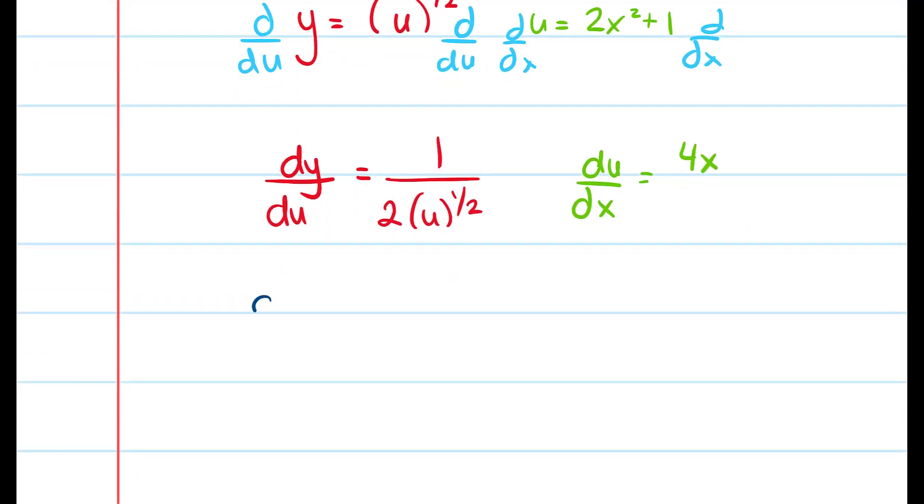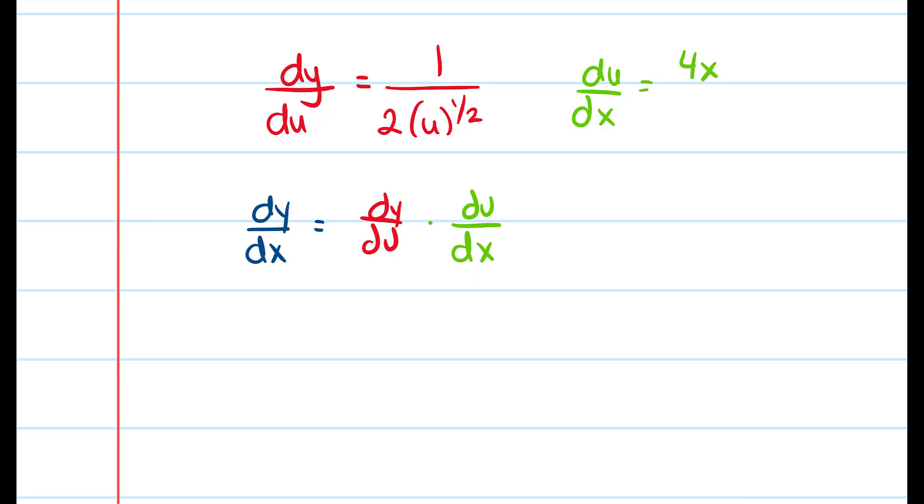And so we have that dy/dx is equal to dy/du times du/dx. And so dy/du is 1 over 2 square root of u. And du/dx is 4x.